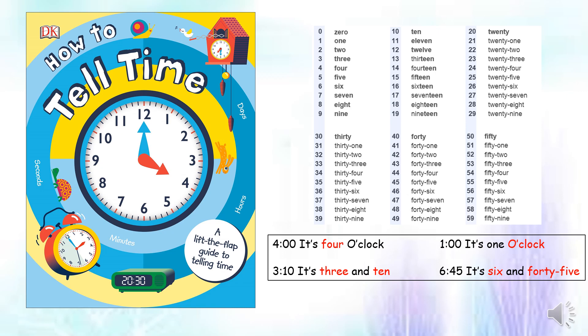Today's topic is how to tell the time. El tema de hoy es cómo decir la hora. The homework was to learn the numbers from 0 to 100. Teníamos como tarea aprendernos y practicar los números del 0 al 100. So, if you already know the numbers, you are ready to tell the time. Una vez yo me sé los números, ya estoy listo para decir la hora en inglés.